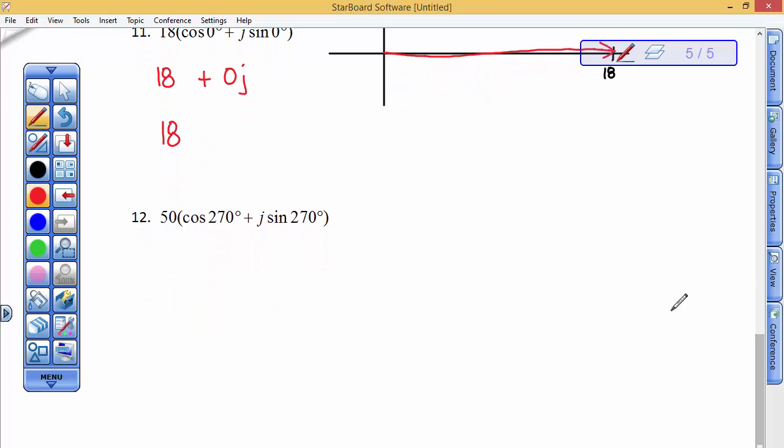So, be careful. This last one, 50 at 270 degrees, is something that's 50 units long this way. So, it's 50 units in length. And it's at 270 degrees. So, the real part is 0, and then the imaginary part is a negative 50j.